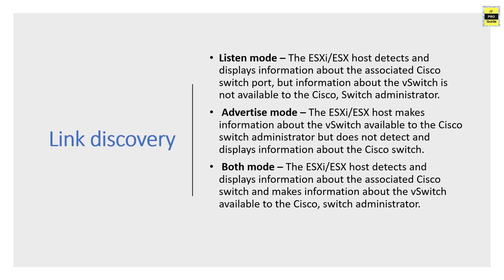In advertise mode, the ESXi host makes information about the vSwitch available to the Cisco switch administrator, but does not detect or display information about the Cisco switch. In both mode, the ESXi host detects and displays information about the associated Cisco switch and also makes information about the vSwitch available to the Cisco switch administrator. Depending on your network and virtual environment, you can choose any of these options.